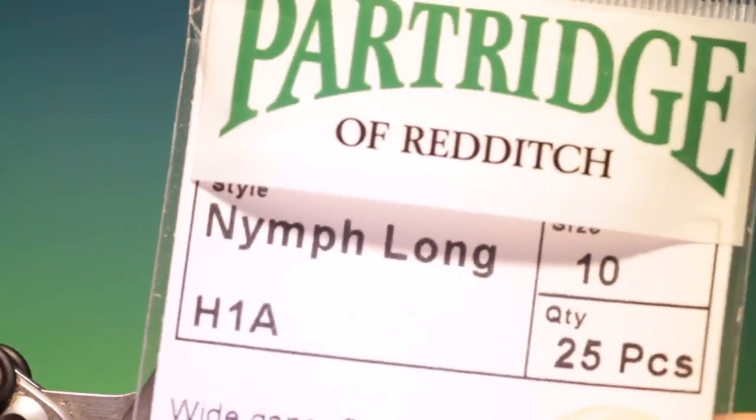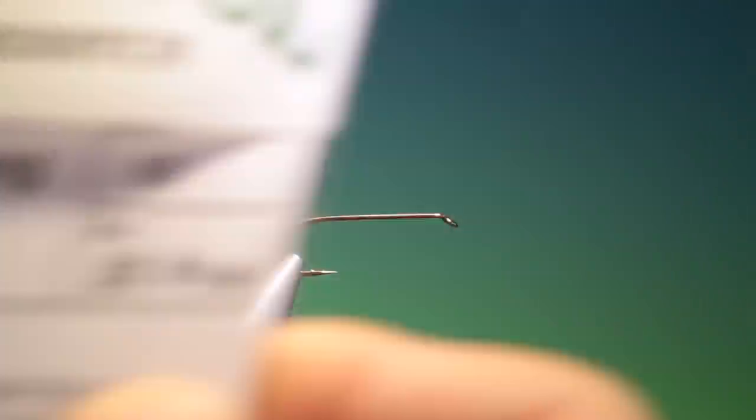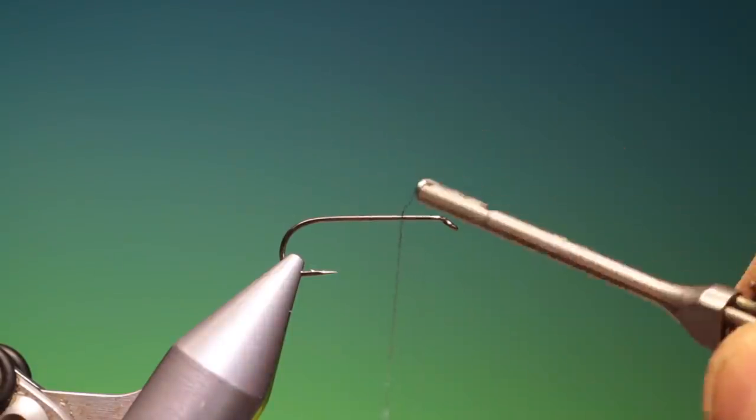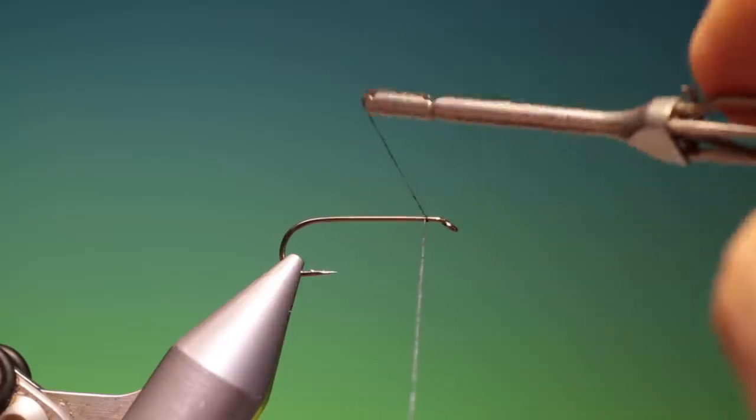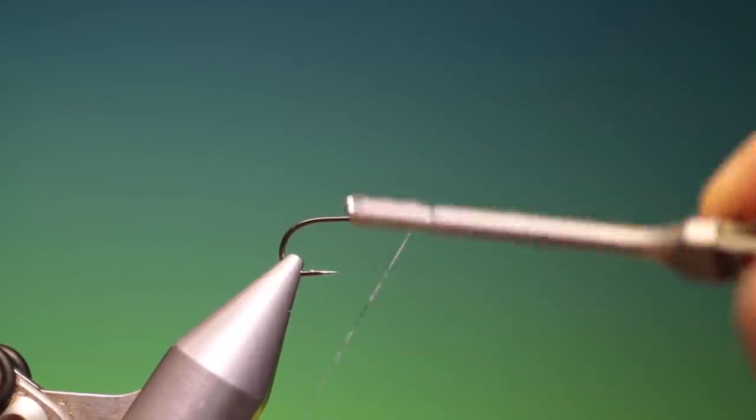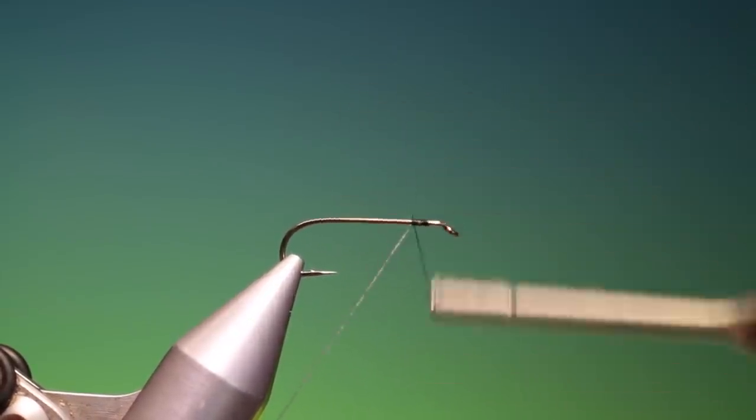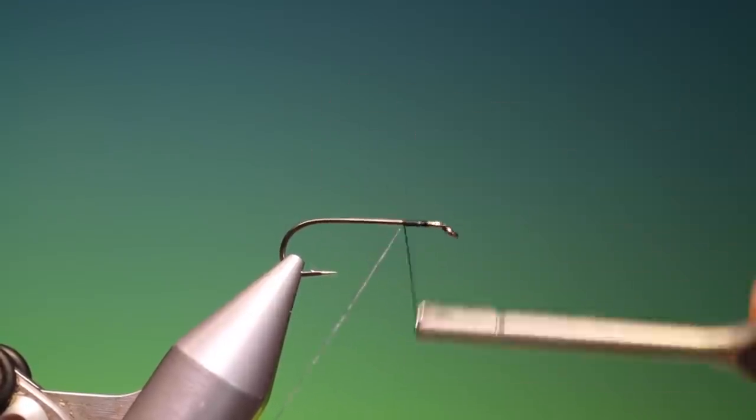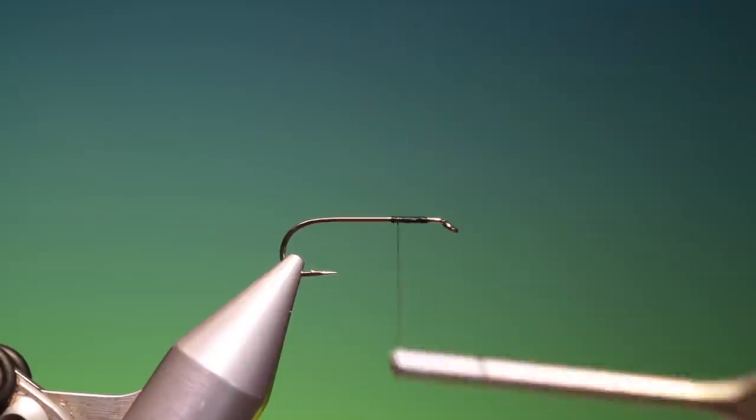Start with the Partridge Extra Long Nymph H1A size 10, black tying thread that will attach just about there and go a ways back, just back there and then we go back up.